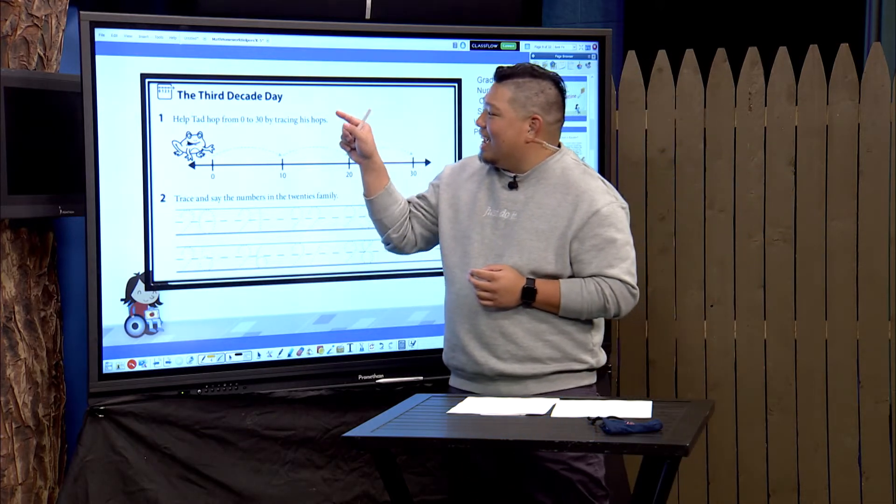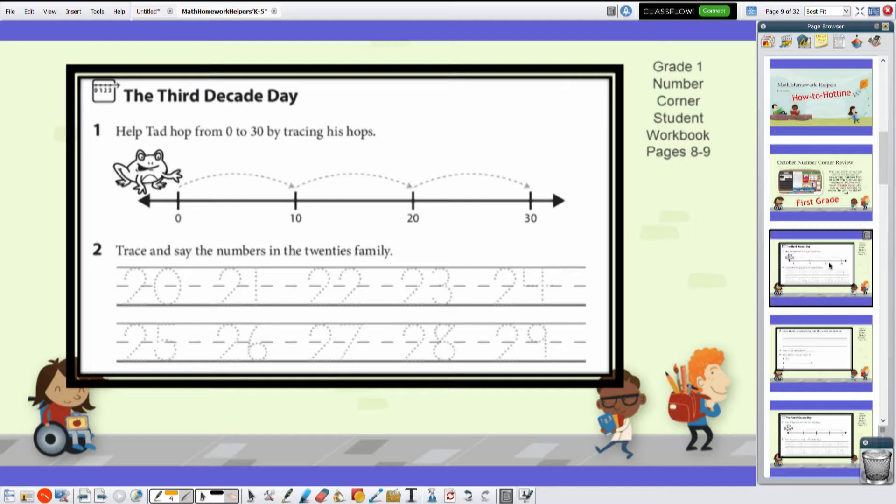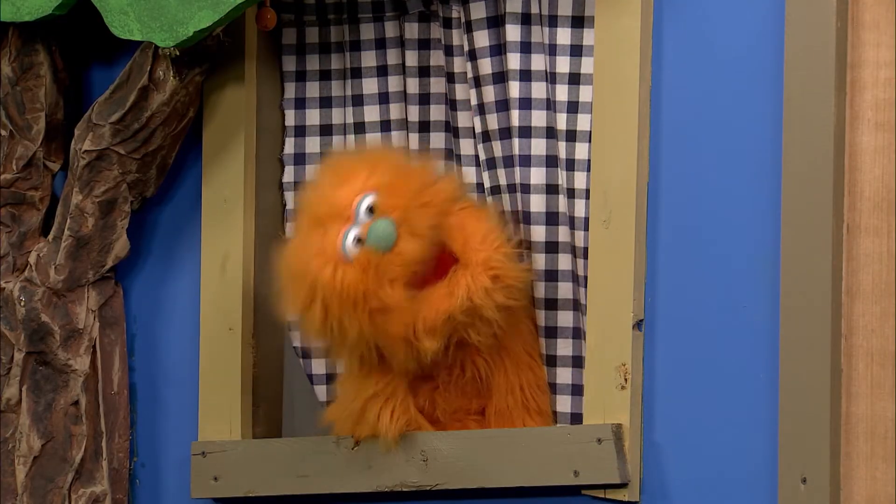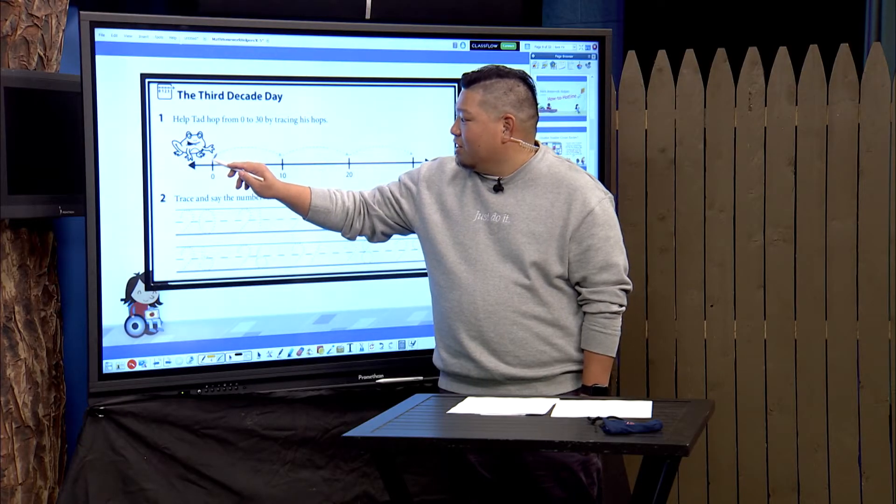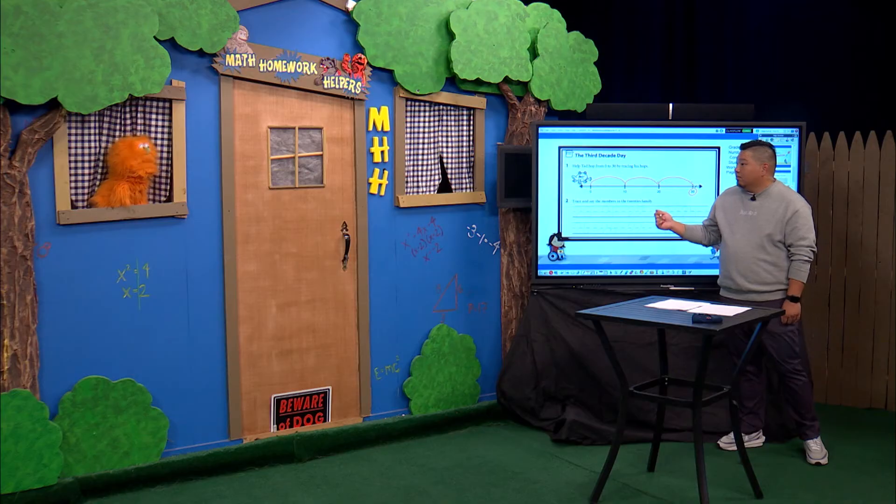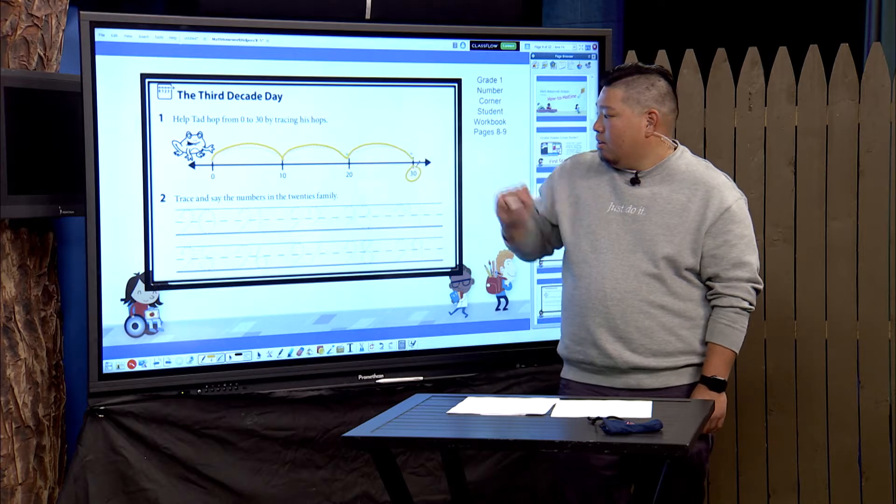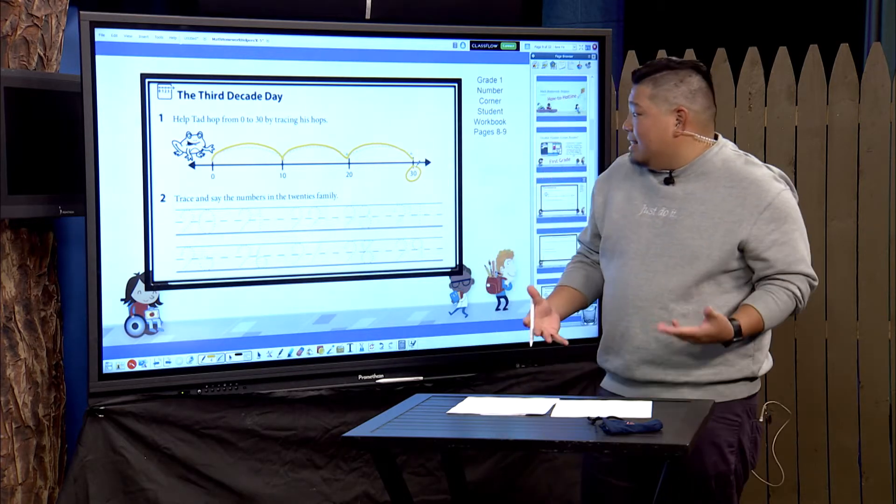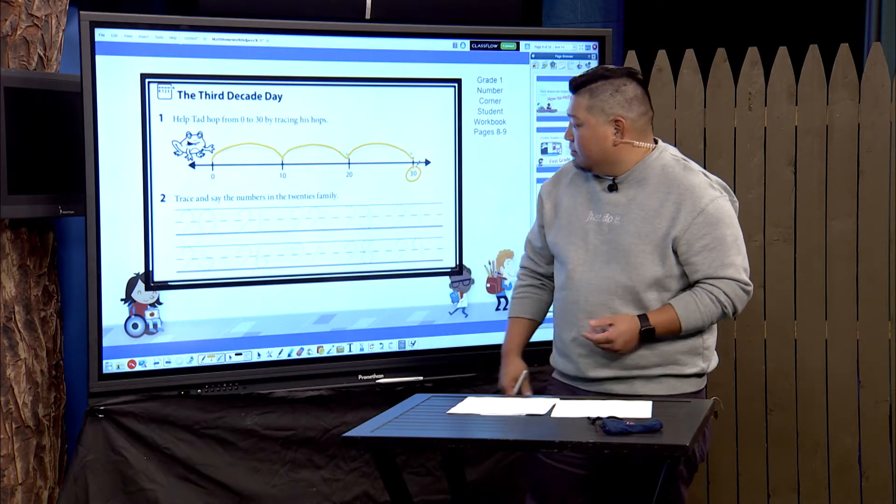All right. So let's take a look at what we have here, the third decade day. So we're going to help Tad hop from zero to 30 by tracing his hops. Oh, I love hopping. So we are going to be counting by tens because that's how we count by decades. Okay. All right. Let's go ahead and start with orange because I think that's your favorite color. How did you know, Mr. Tang? You're amazing. So let's start at zero. Tad's at zero. Our first hop, we're going to count by 10. 10. 10. Another 10. We're at... 20. 20. And one more 10? 30. 30. So how many times did we hop to get to 30? Let's see. 1, 2, 3. Awesome. So if we're counting by tens, it takes us three hops to get from zero to 30. Okay. That makes sense.